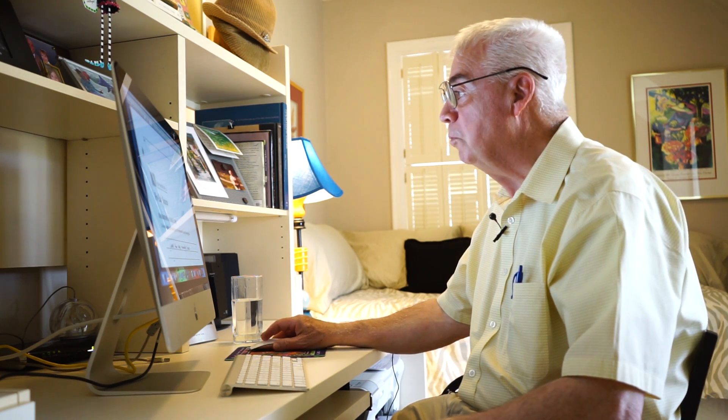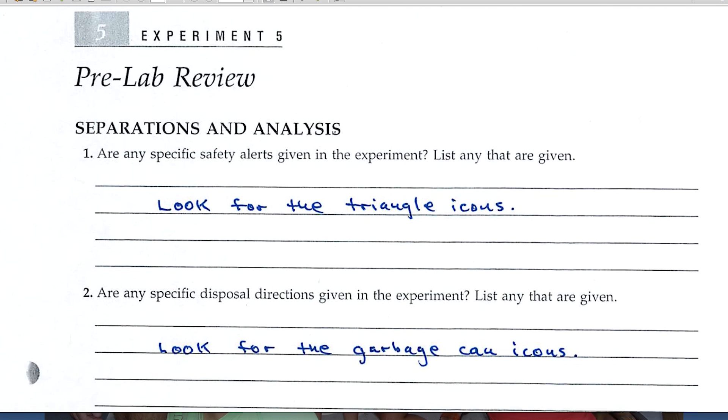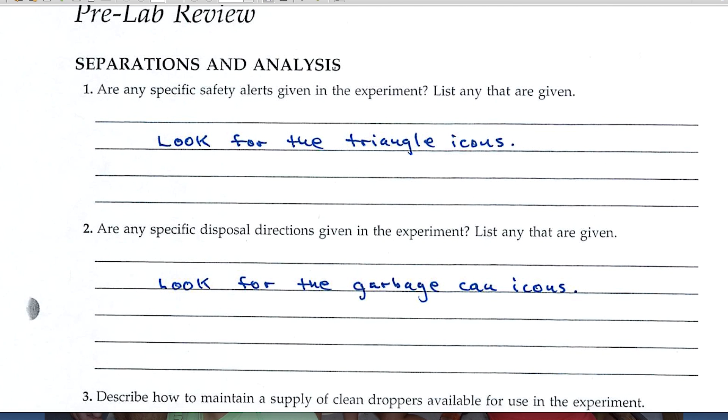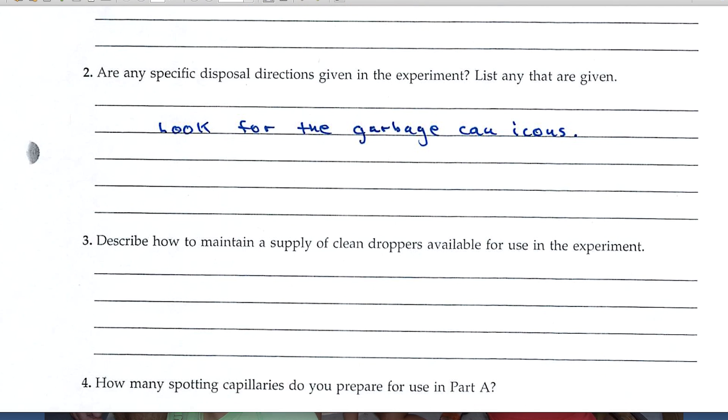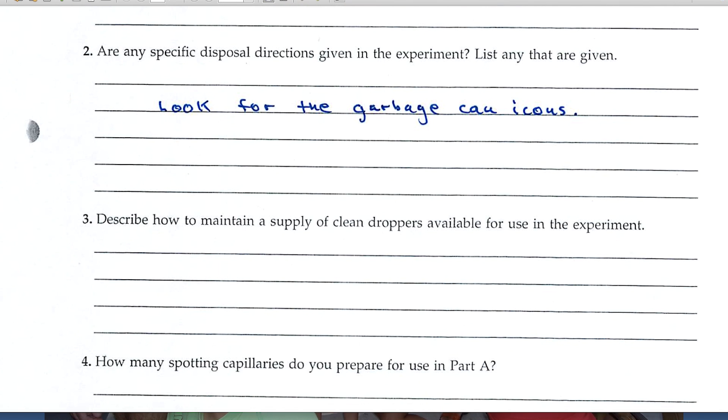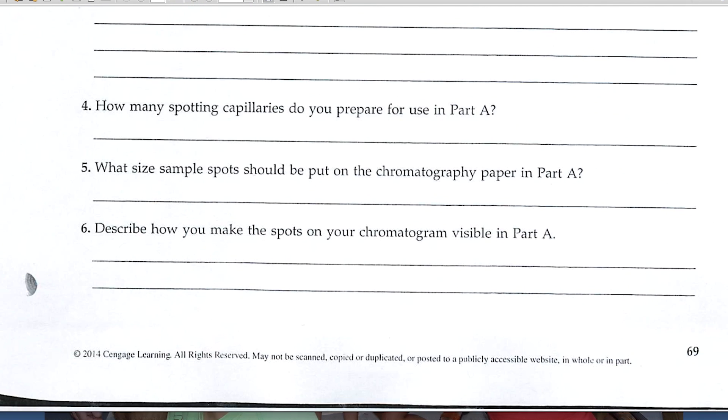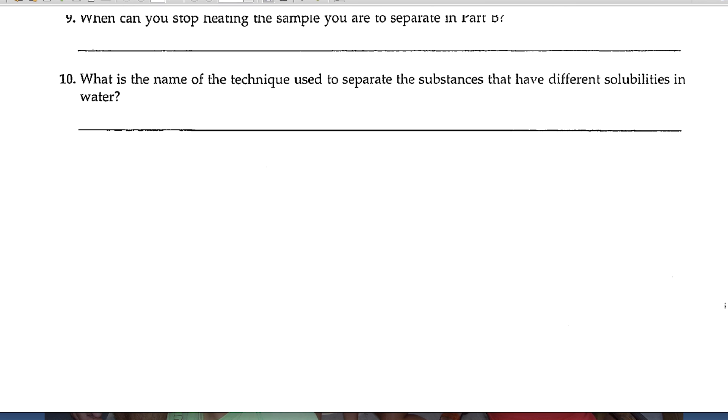Let's begin with the pre-lab review page. Question number one is always concerning safety alerts, and when you answer this question you'll want to review the text and review the lab manual and look for the triangle icons. Question number two is on disposal directions. Look for the garbage can icons, and the rest of these questions are pretty descriptive in the pre-lab review. I don't think you'll have any trouble with them.